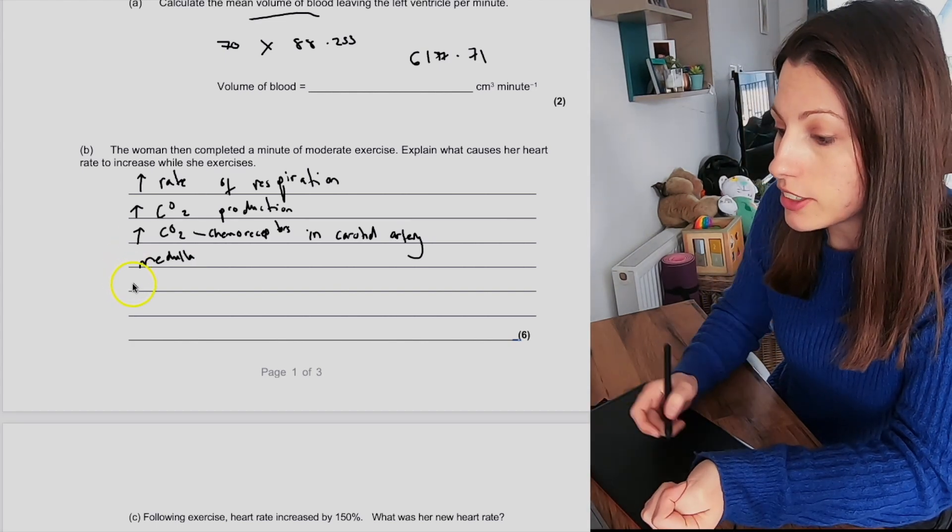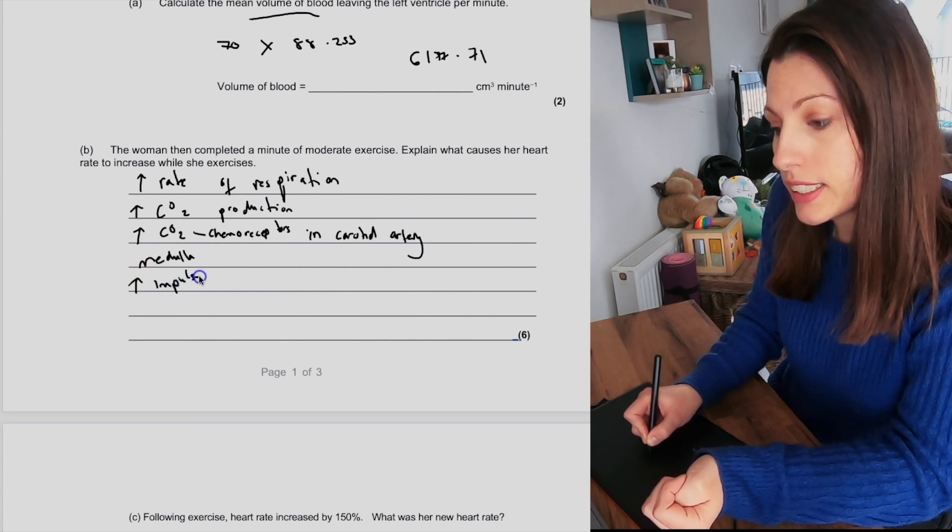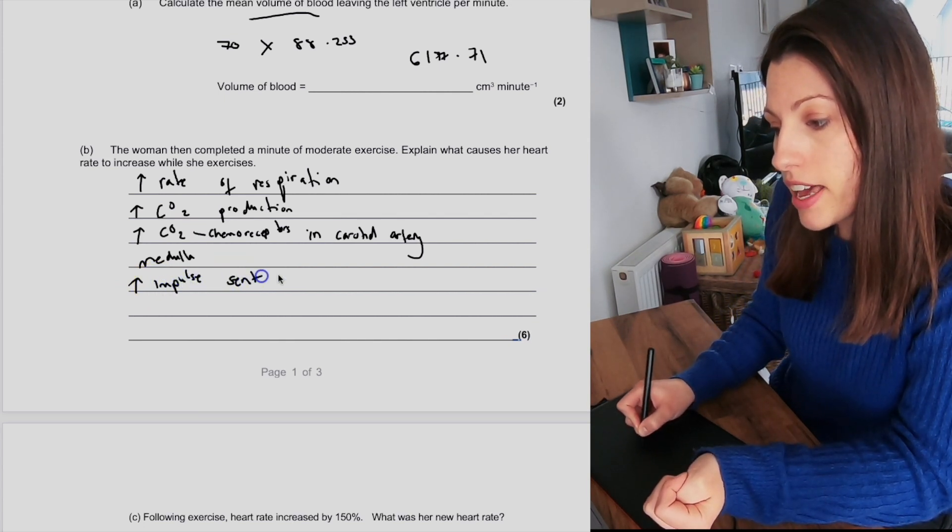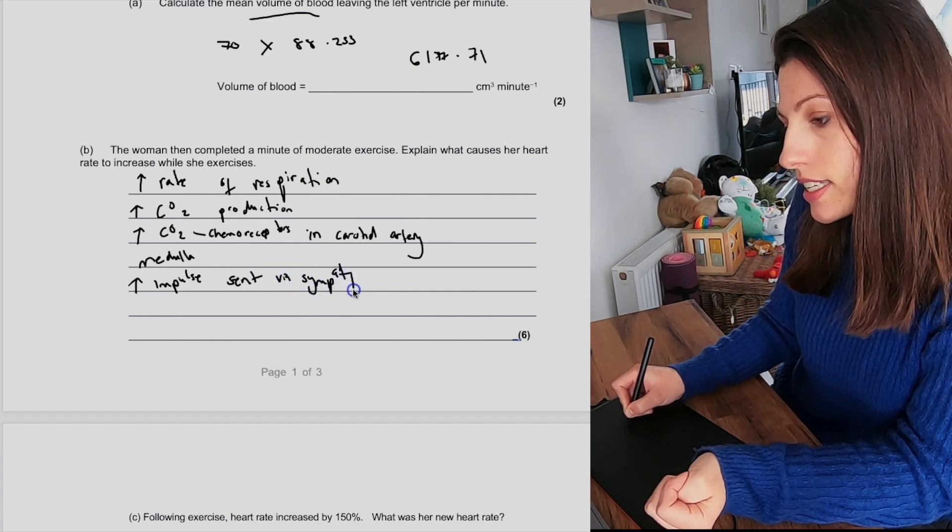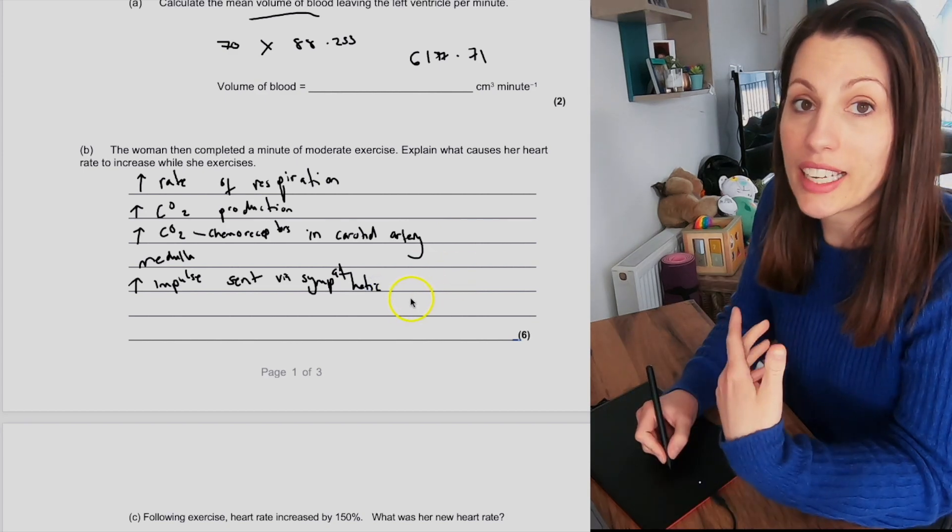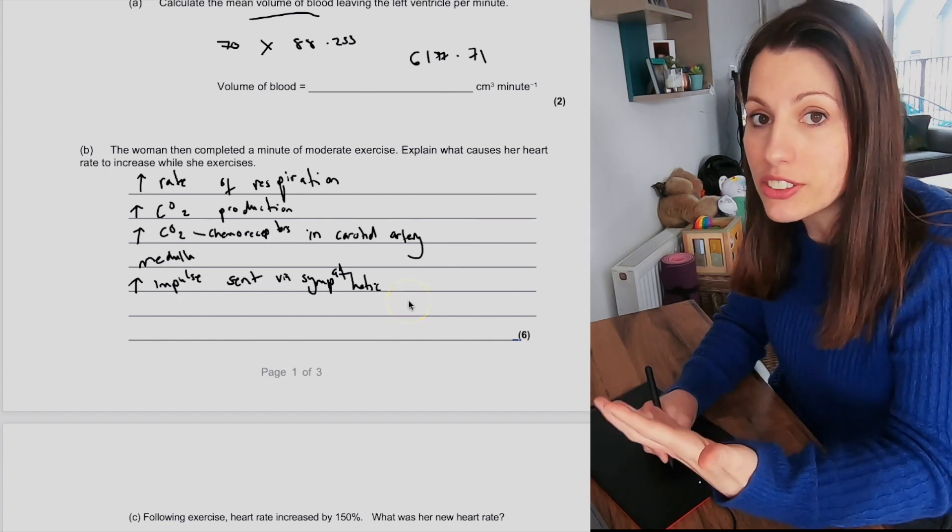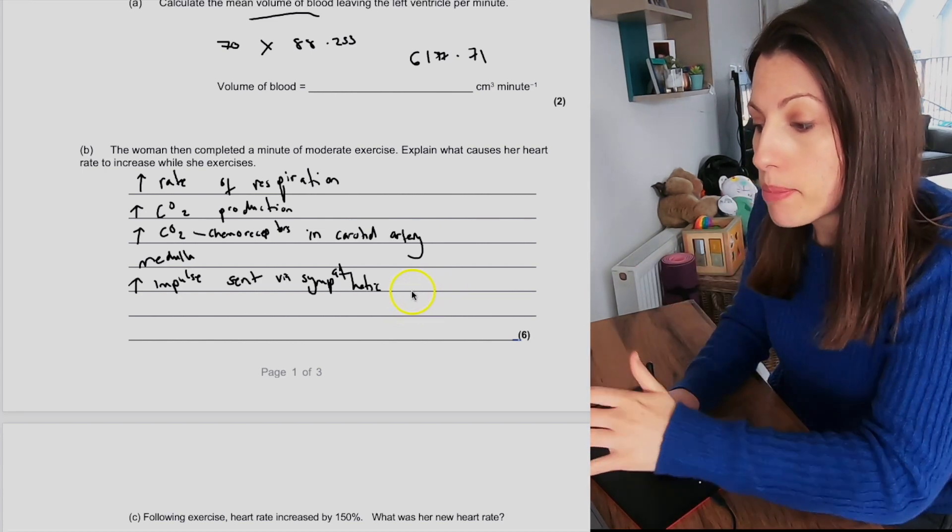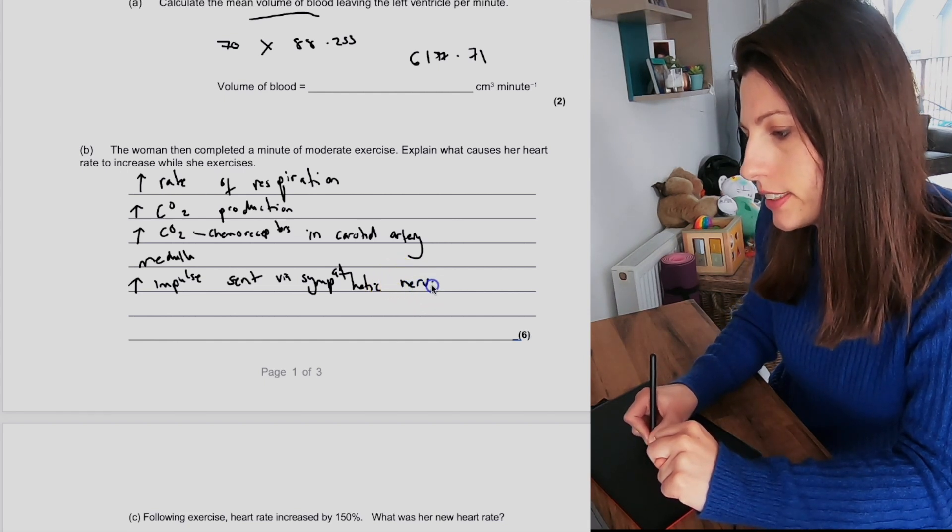The medulla is then going to cause an increase in the number of impulses sent via the sympathetic nervous system. And this is the nervous system that will result in an increase in the heart rate. So more impulses are sent via the sympathetic nervous system.